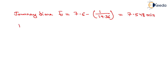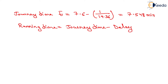Now we have to determine the value of running time. Running time equals journey time minus delay. Journey time is 7.548 minutes, minus delay of 1.96 minutes. On solving this, we will have running time equals to 5.58 minutes.